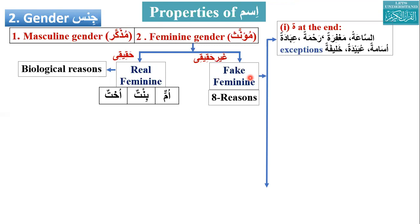The first reason an ism is considered a fake feminine is that it has a ta marbuta at the end — a round ta with two dots. If any ism has ta marbuta at the end, it is considered feminine, like askar, rahmatin for mercy. All words with ta marbuta are feminine gender. There are some exceptions, like names of men — Usama, Ubaidah, Khalifa — but mostly ta marbuta at the end means feminine.